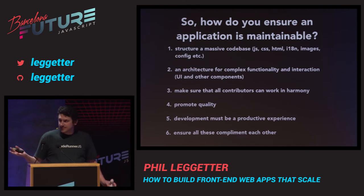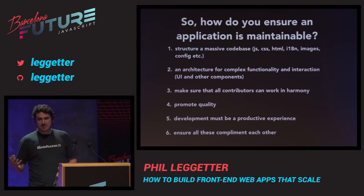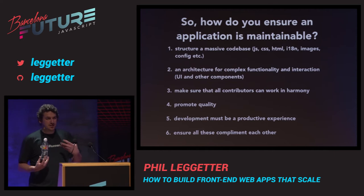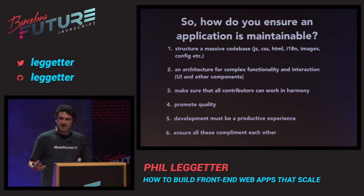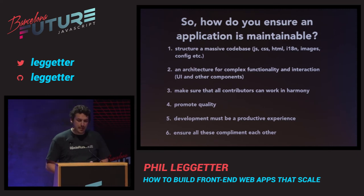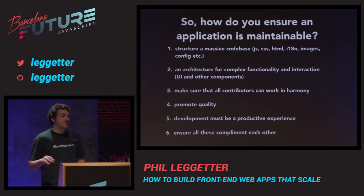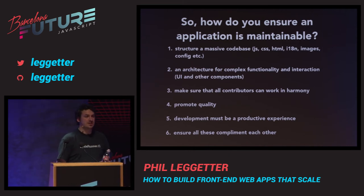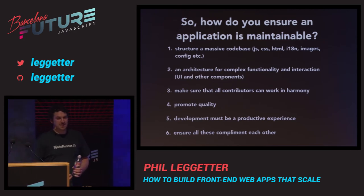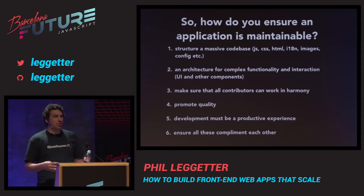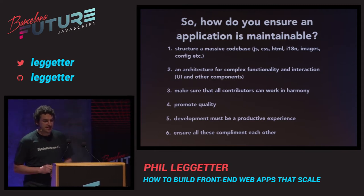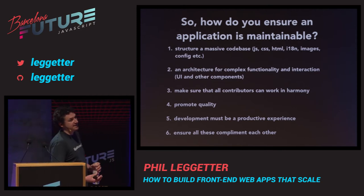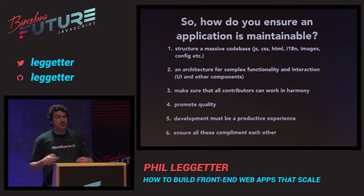We need to make sure this application is maintained and maintainable. How do we structure this massive code base? What's the application architecture to achieve this type of functionality and these interactions? How do you make sure all these different types of contributors can do so in a harmonious way? How do you ensure quality? The more code you have, the more likely you're going to see benefits from tests. And development has to be productive — as developers, we want to be focusing on building functionality.